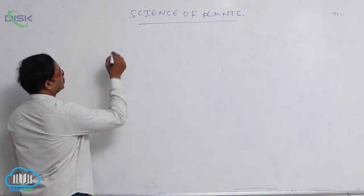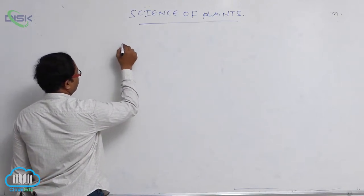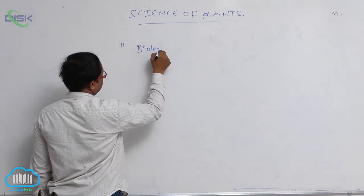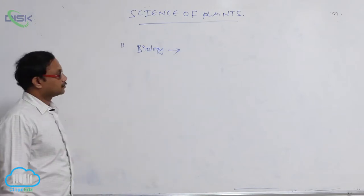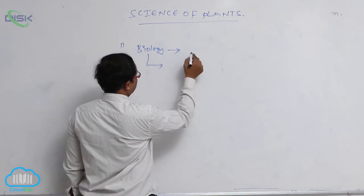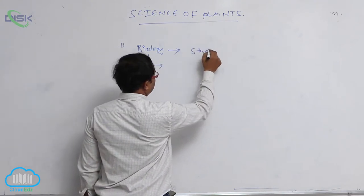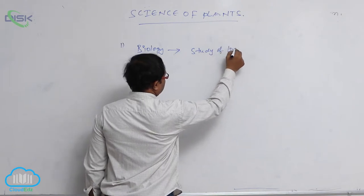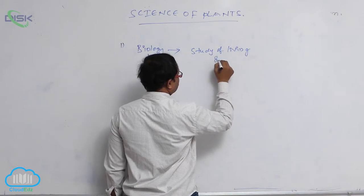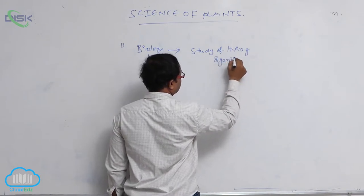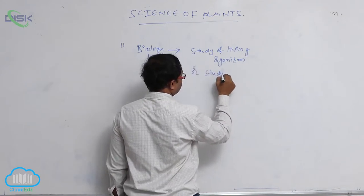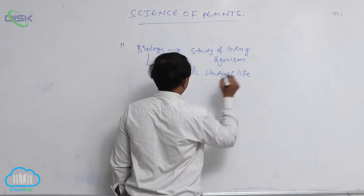Science of plants. Generally in the science of plants, it deals about biology. Biology means it is a study of living organisms, or study of life. That is known as biology.